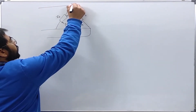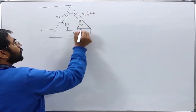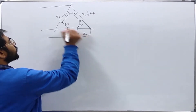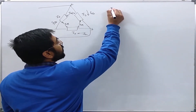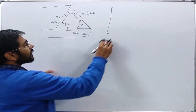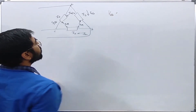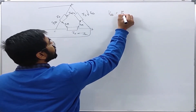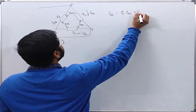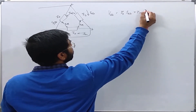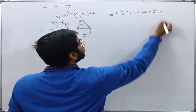The delta has nodes A, B, C with branch currents IAB, IBC, and ICA. Now we can write the equations. VAB is nothing but Zs times IAB plus Zm times IBC plus Zm times ICA.